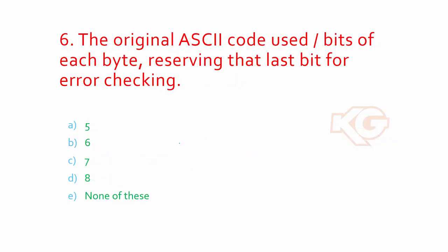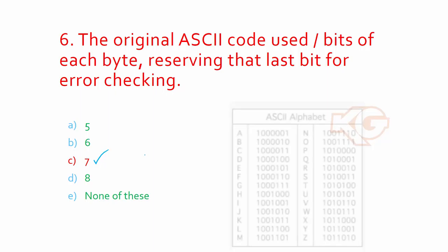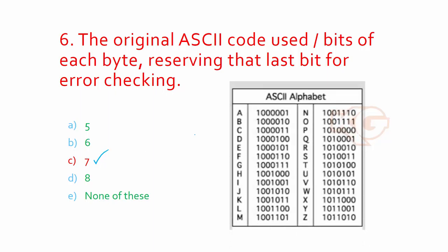The original ASCII code used how many bits of each type, reserving the last bit for error checking? You can choose option seven. This is correct. It's a total of eight bits, but one is used for parity. You can see the ASCII alphabet - each one has seven bits. So the total should be seven. It covers almost all the alphabets.